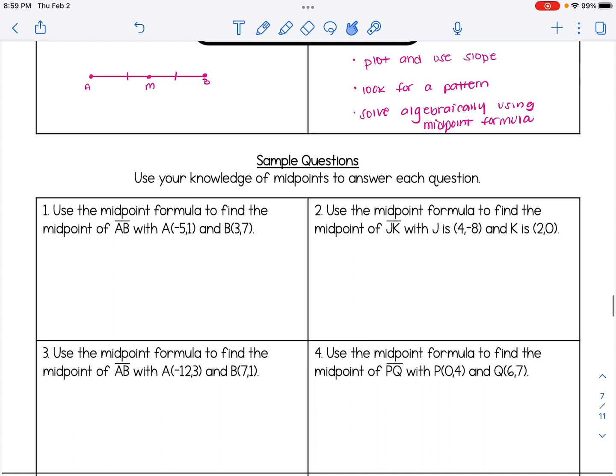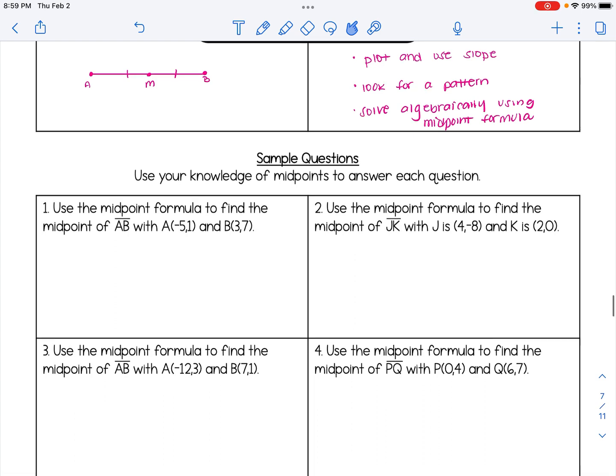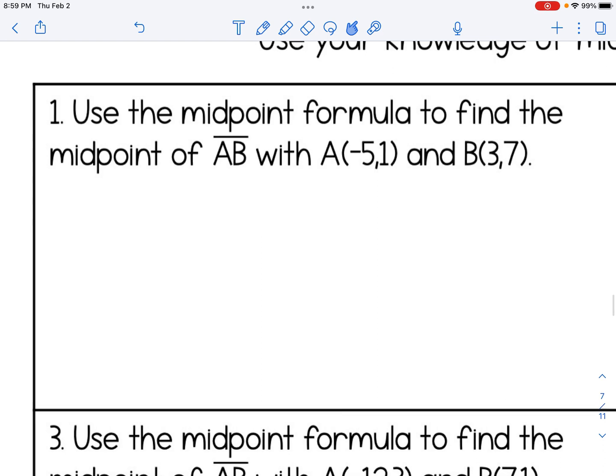First let's look at some sample questions where we're just asked to find the midpoint. Number one, use the midpoint formula to find the midpoint of AB with A(-5, 1) and B(3, 7). So I'm going to add up the x's and divide by 2, add up the y's, divide by 2. For -5 plus 3, that gives me -2 over 2 or -1. For the y's, 1 plus 7 is 8, divide by 2 and I get 4. So the coordinates of the midpoint are (-1, 4).